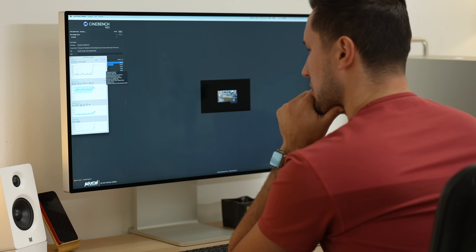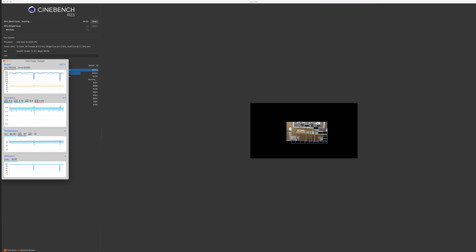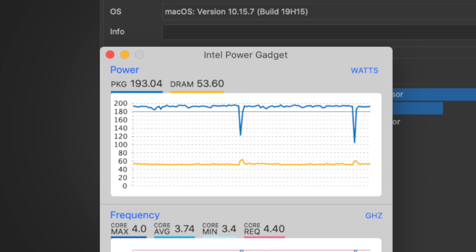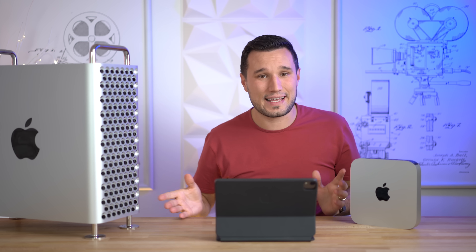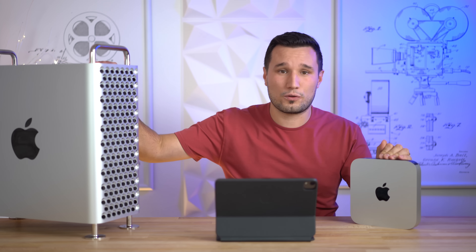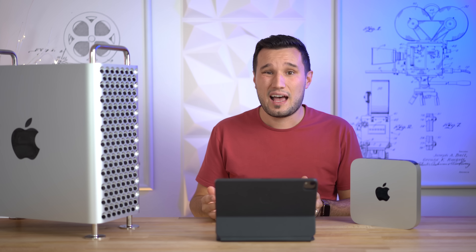Looking at Cinebench R23, the Mac Pro scored 83% higher — a pretty big difference, though I was expecting even bigger. What's absolutely mind-blowing is that the Mac Pro uses up to 193 watts compared to the Mac Mini's 13 watts. That's because it's not only an ARM design but also a 5-nanometer processor versus a much older 14-nanometer design. The Mac Mini gets 594 points per watt compared to just 73 on the Mac Pro.